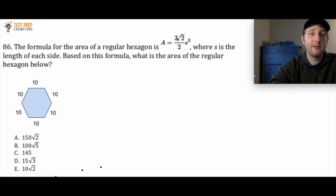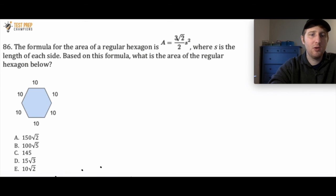The formula for the area of a regular hexagon is A equals 3 times the square root of 2 divided by 2, times S squared, where S is the length of each side. Based on this formula, what is the area of the regular hexagon shown here? Is it A, B, C, D, or E? Let's have you pause the video, try to figure this out, and then when you're ready, we'll go over how to do it.